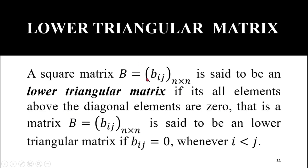Lower triangular matrix: a square matrix B equal to b_ij with n rows and columns is said to be a lower triangular matrix if all elements above the diagonal elements are 0. That is, b_ij equals 0 whenever its row suffix is less than the column suffix. Note that in a square matrix, when the row suffix is greater than the column suffix the element is below the diagonal, and when the row suffix is less than the column suffix the element is above the diagonal.